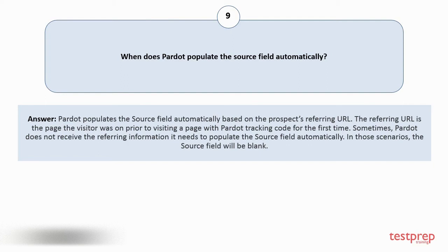Question number nine: When does Pardot populate the source field automatically? Pardot populates the source field automatically based on the prospect's referring URL — the page the visitor was on prior to visiting a page with Pardot tracking code for the first time. Sometimes Pardot does not receive the referring information it needs to populate the source field automatically; in those scenarios the source field will be blank.